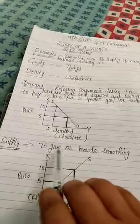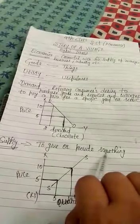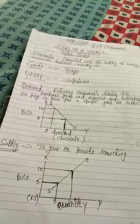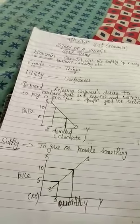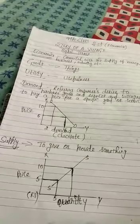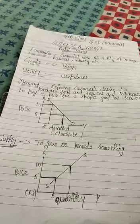Supply. To give or provide something. The quantities of a commodity which a seller is prepared to sell at given prices in a given period of time is called supply.